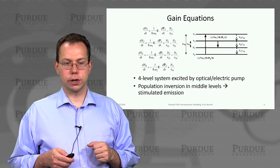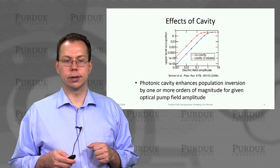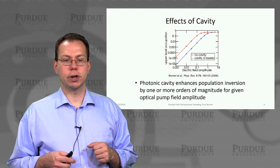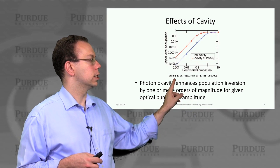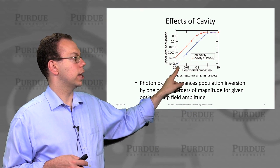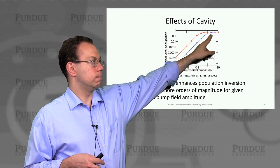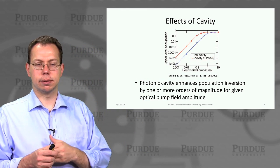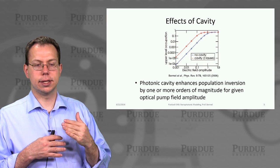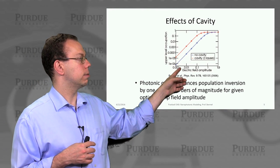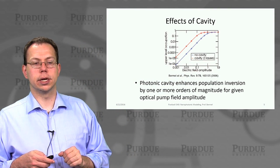At least in principle, this setup should give us the behavior we're looking for. Looking at the population inversion as a function of electric field amplitude — just like with a uniform medium with no cavity, as you increase the electric field amplitude the upper level population goes up and you can approach inversion even for a two-state system. But if you put a photonic crystal cavity around it, the upper state population actually goes up by more than an order of magnitude, giving a clear advantage over the no-cavity case.